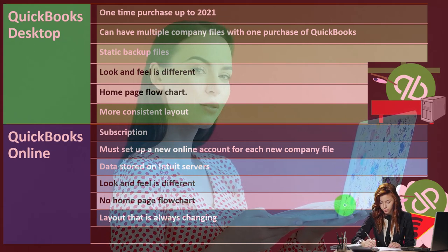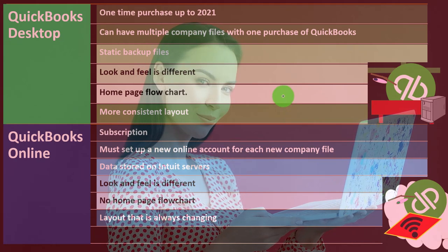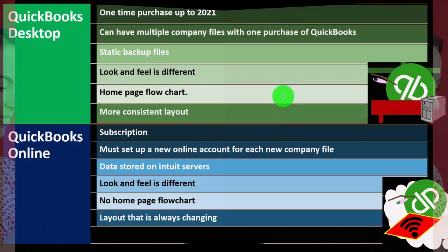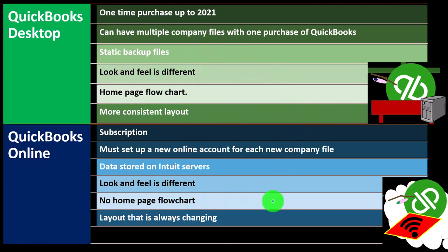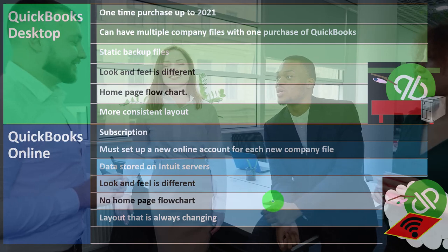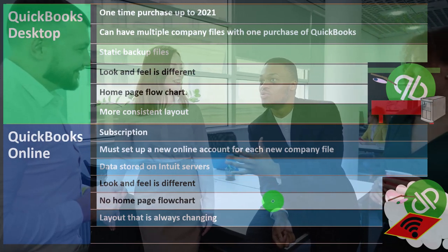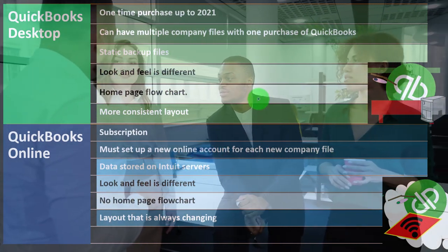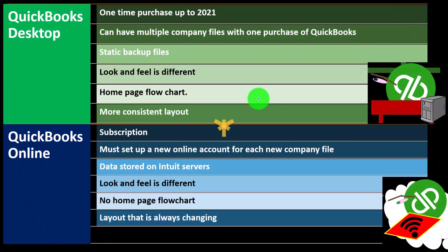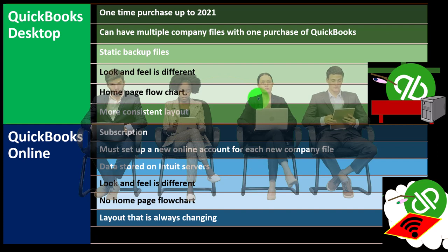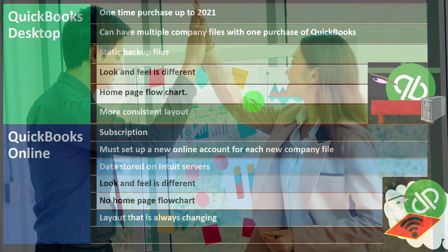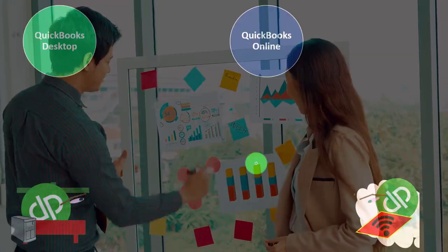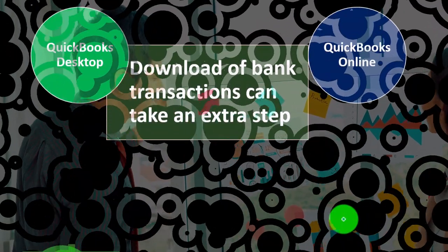The desktop version has a very nice flowchart home page, which isn't present on the online version. The online version has tested a flowchart on their page but it's not always there since the website changes frequently. The desktop flowchart is a very nice visual tool that helps you visualize the flow of forms typically used in the accounting process. Even for the online course, we'll reference that desktop flowchart because it's such a helpful visual.